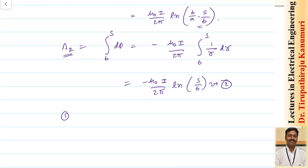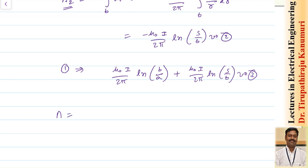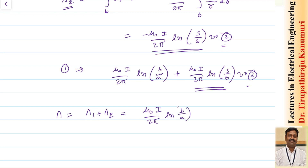Equation 1 can be rewritten as (μ₀I / 2π)[ln(b/A) + ln(S/b)], which is equation 3. The total flux linkages equal the sum of equations 2 and 3. The ln(S/b) terms are equal and opposite, so they cancel, leaving only (μ₀I / 2π) ln(b/A). This gives the flux linkages from the surface of the inner conductor to the surface of the outer conductor.